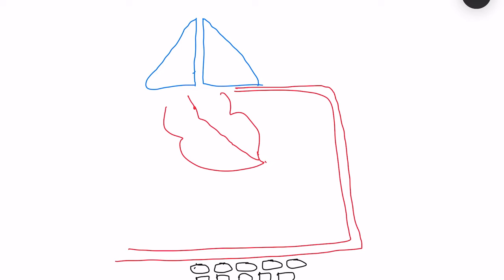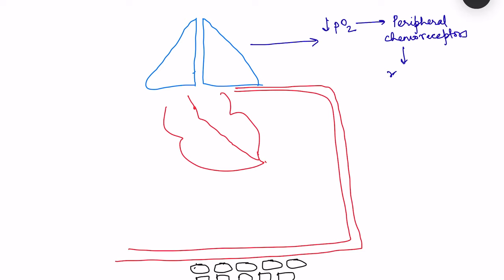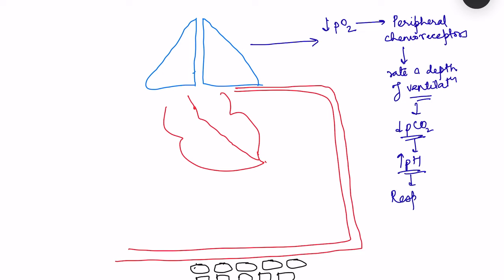The first changes occur in the pulmonary system. The decrease in partial pressure of oxygen in blood is detected by peripheral chemoreceptors, which respond by increasing the rate and depth of ventilation. However, with increased ventilation, more carbon dioxide moves out of the body, causing a decrease in the partial pressure of CO2 in the blood. This decreased CO2 raises pH, leading to respiratory alkalosis.